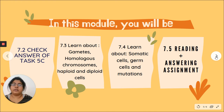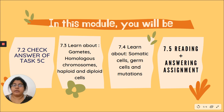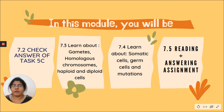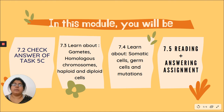Under these two objectives, I have broken the objective into three tasks. Before we start these three tasks, I will be doing Task 7.2, where I'm sharing the answer to the paper five type of question that I had given in Module 5. Then we will learn about gametes, homologous chromosomes, and haploid and diploid cells.